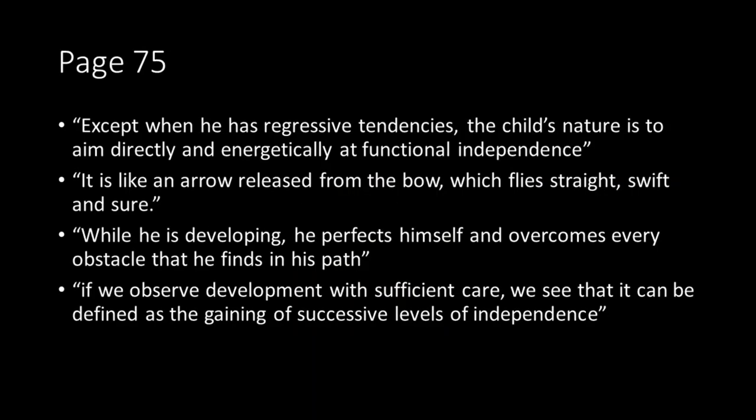Let's start on page 75 of The Absorbent Mind. Chapter 8 starts out talking about independence, and Maria Montessori says: 'Except when he has regressive tendencies, the child's nature is to aim directly and energetically at functional independence. It is like an arrow released from the bow, which flies straight, swift, and sure.' She also goes on to say that while he is developing, he perfects himself and overcomes every obstacle that he finds in his path.